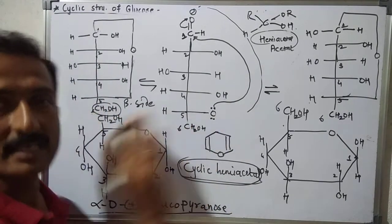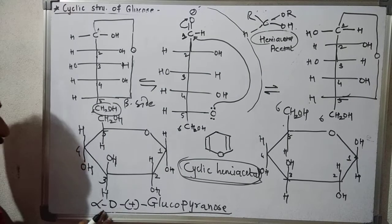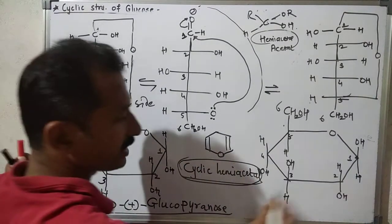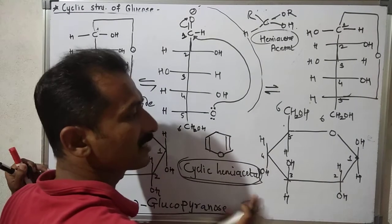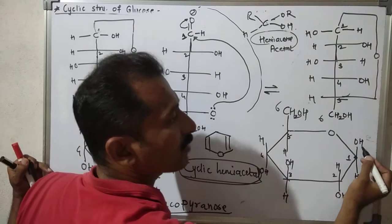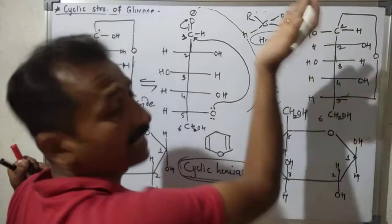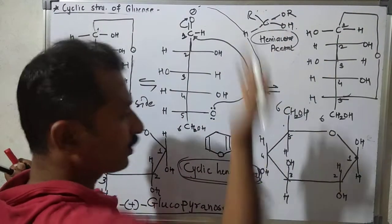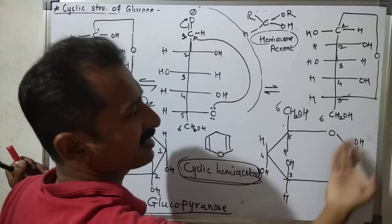This is Alpha-D-plus glucopyranose. For the beta form, the OH is on the upper side — above the plane of the flat ring.